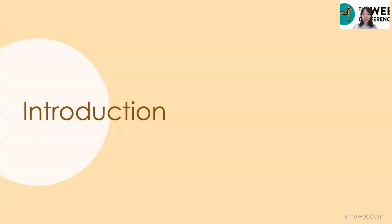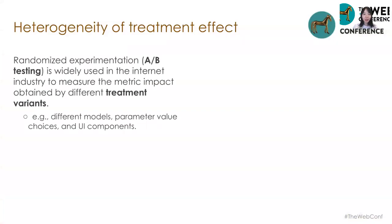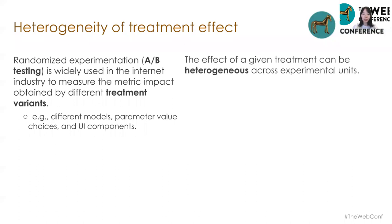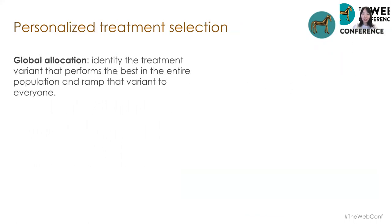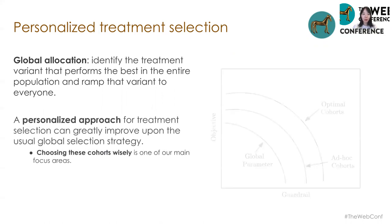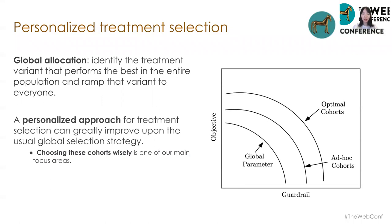To start with our motivations: randomized experiments are widely used in the internet industry to measure the metric impact obtained by different treatment variants, such as different machine learning models, parameter values in a recommendation system, and UI components. However, the effect of a given treatment can be heterogeneous across experimental units. For example, members across the world might react to the same feature differently. After conducting experiments, we usually identify the treatment variant that performs best in the entire population and ramp that variant to everyone — we refer to this as a global allocation. It's clear that this might be suboptimal.